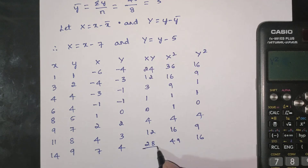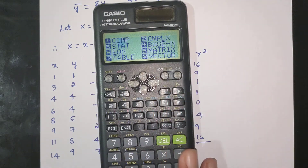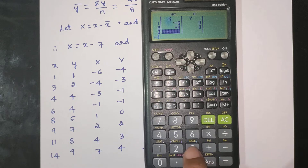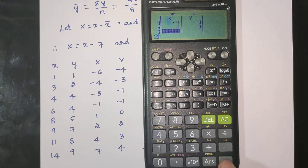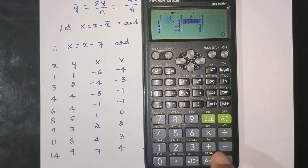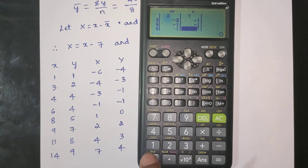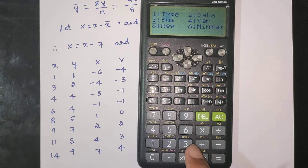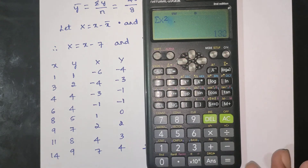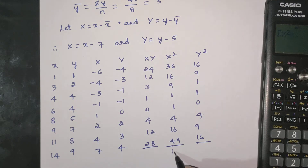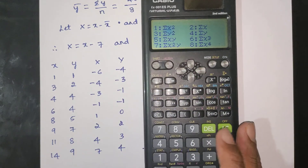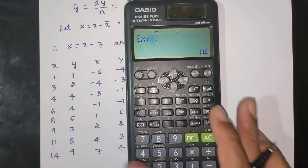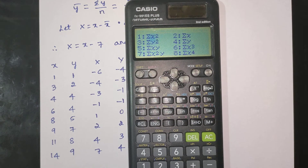We have: summation of X·Y, X², and Y². The X values: −6, −4, −3, −1, 1, 2, 4, 7. The Y values: −4, −3, −1, −1, 0, 2, 3, 4. Summation of X·Y = 84. Summation of X² = 132. Summation of Y² = 56.